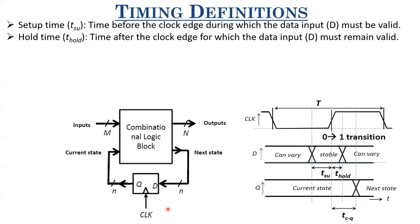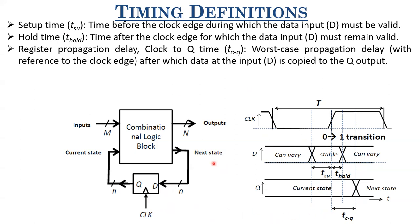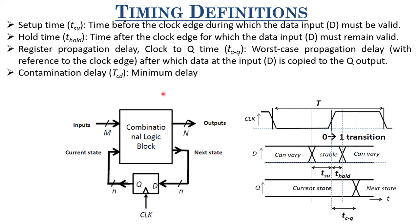There is also the tCQ or register propagation delay, which is clock-to-Q time — the worst case propagation delay with reference to the clock edge. In synchronous circuits everything happens at the clock edge, so the reference point is this clock edge itself. The worst case propagation delay from the clock edge for the D input to get transferred to Q is called tCQ. There is also something called contamination delay, which is the minimum delay. In combinational circuits, the delay depends on what combination of inputs is used, so there can be worst case propagation delay and minimum propagation delay, called contamination delay.